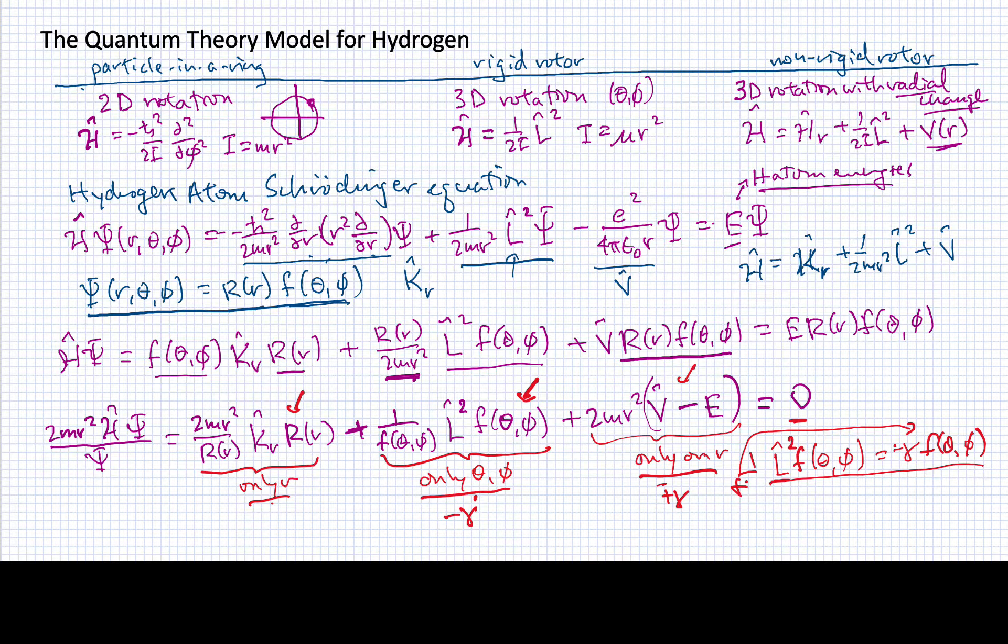We know already what that result is. We found it with the rigid rotor. We found that L squared operating on the spherical harmonics gave us h-bar squared L times L plus 1 times the spherical harmonics.